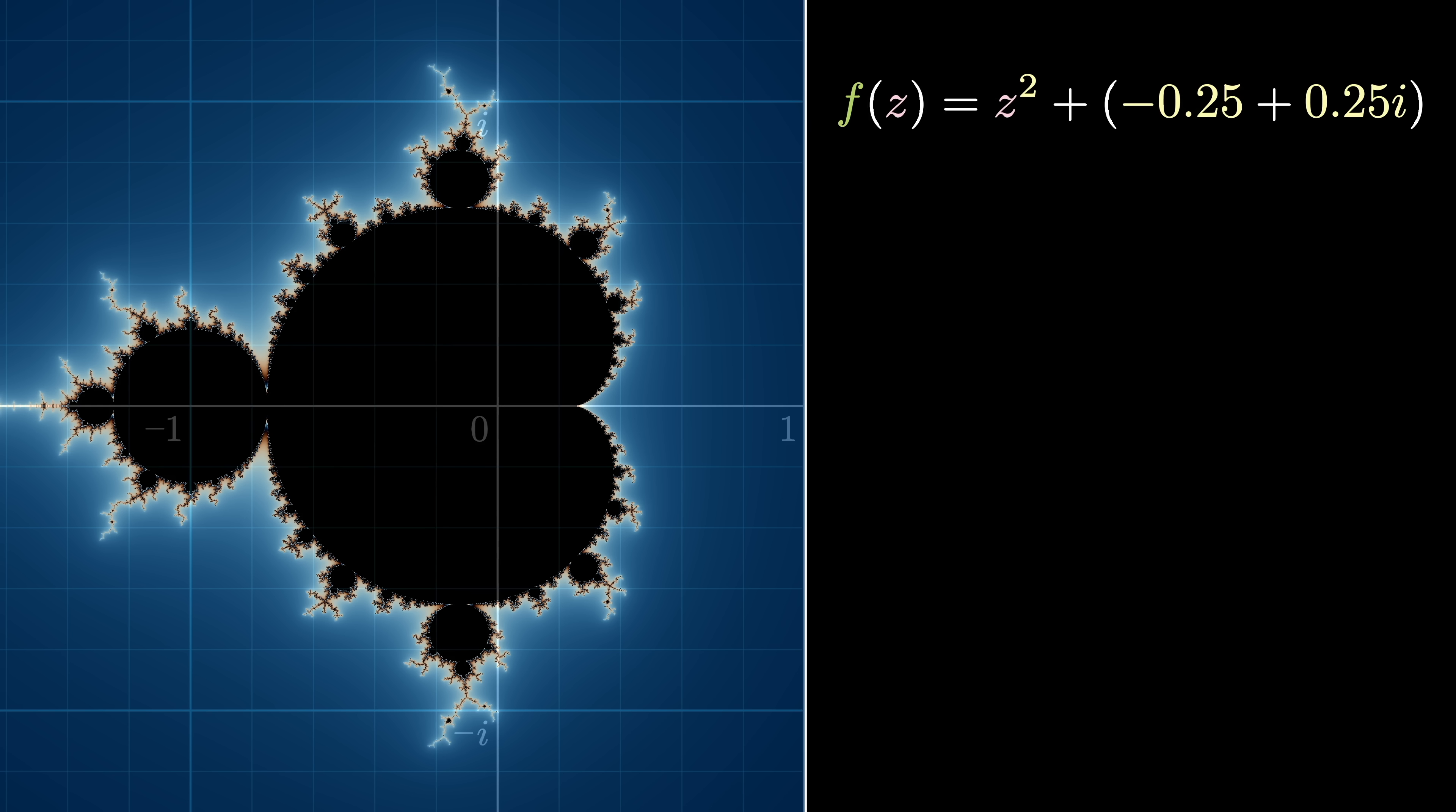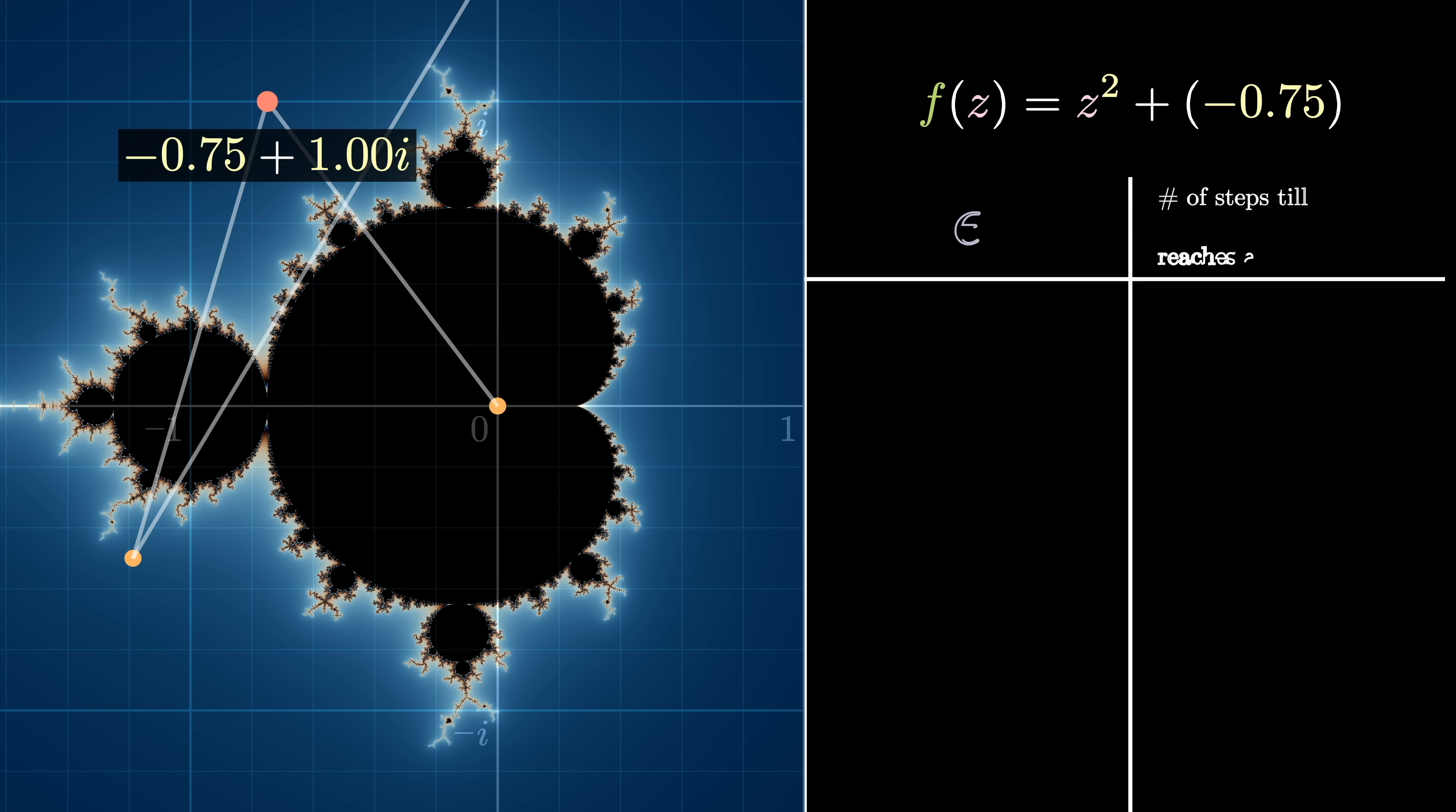The most intricate part about the Mandelbrot set is the behavior around the edges. Here, consider the point negative 0.75. Since this point is contained in the Mandelbrot set, we know that f(z) should remain bounded. But it's right at the border of the set. Meaning that if I take a small step upwards, so negative 0.75 plus epsilon i for some small number epsilon, it should blow up. And actually, it can be shown that if the number ever reaches a magnitude of 2, it blows up to infinity.